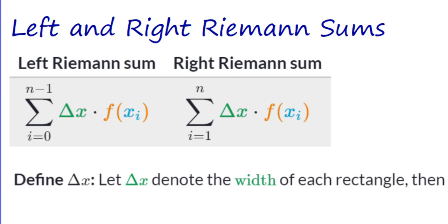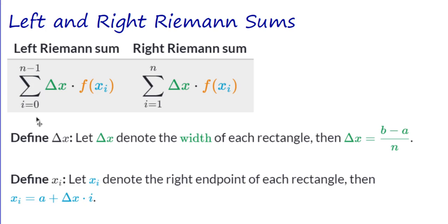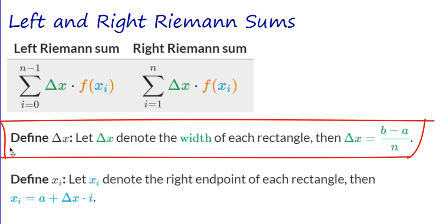We've done left and right Riemann sums. In the left Riemann sum in summation notation, i begins at 0 and goes to n minus 1 — going from the left-hand side. Delta x denotes the width of each rectangle, and delta x is b minus a (your upper minus your lower limits) divided by n, the number of rectangles.